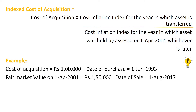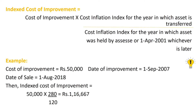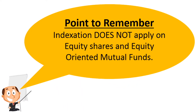Here is an example to explain the above formula. Suppose you purchased your house for Rs. 1,00,000 in 1993. The fair market value of your house on 1st April 2001 is Rs. 1,50,000, and you sold it in 2017. Your indexed cost of acquisition would be Rs. 1,50,000 × 272 (the CII of FY 2017-18), divided by the CII of 2001-02. Similarly, you can calculate the indexed cost of improvement. Important point: the concept of indexation does not apply to equity shares and equity-oriented mutual funds.